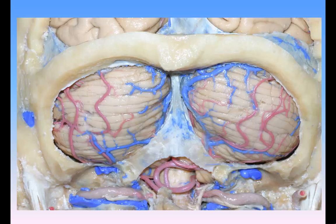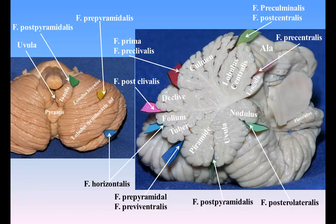The undersurface of the cerebellum presents in the middle line the inferior vermis, buried in the vallecula and separated from the hemisphere on either side by a deep groove, the sulcus valleculae. Here, as on the upper surface, there are deep fissures dividing it into separate segments or lobules, but the arrangement is more complicated and the relation of the segments of the vermis to those of the hemispheres is less clearly marked. The inferior vermis is subdivided from below backwards into: 1. the nodule, 2. the uvula, 3. the pyramid, and 4. the tuber vermis. The corresponding parts on the hemisphere are: 1. the flocculus, 2. the tonsilla cerebelli, 3. the biventral lobule, and 4. the inferior semilunar lobule.